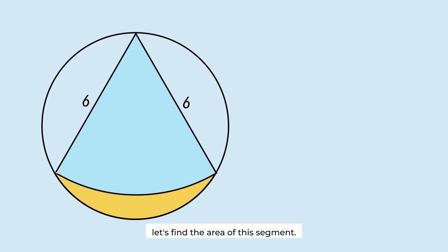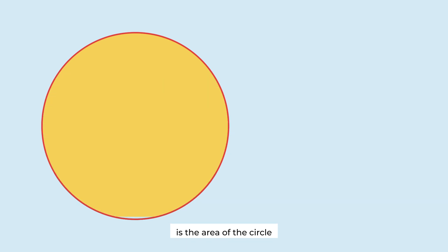Now, let's find the area of this segment. The three sides of this equilateral triangle are chords of equal length within this circle. So, the areas of these segments are equal. The area of these segments is the area of the circle minus the area of the equilateral triangle.